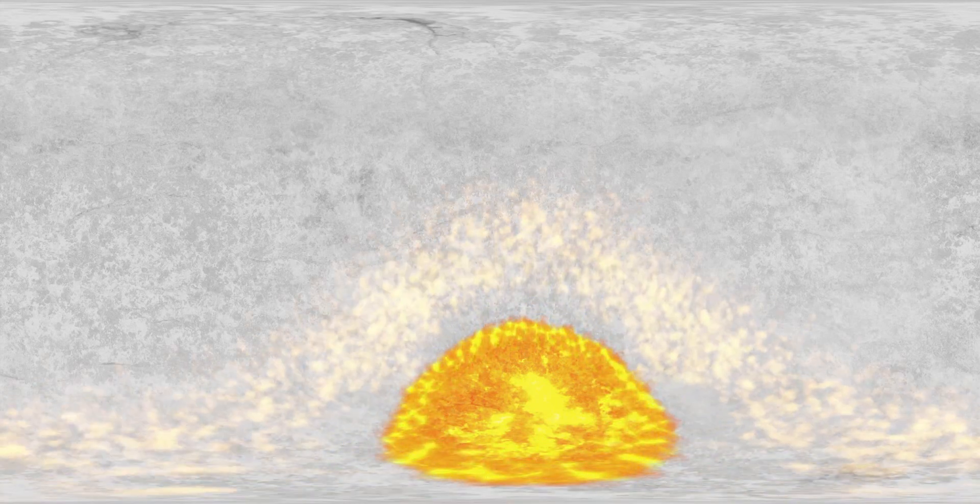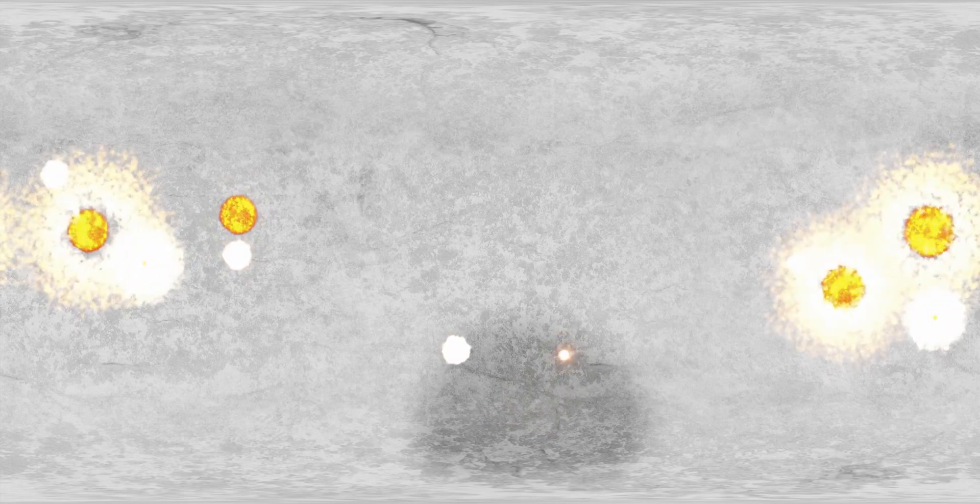Around 4.3 billion years ago, a giant impact battered the Moon's South Pole, forming the South Pole-Aitken Basin and sending debris as far as the opposite side of the Moon. This impact marked the beginning of a period that would cause large-scale changes to the Moon's surface.